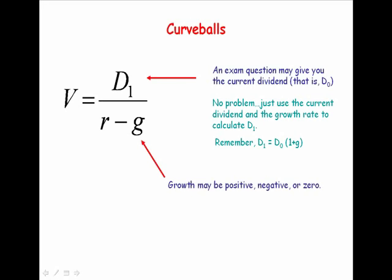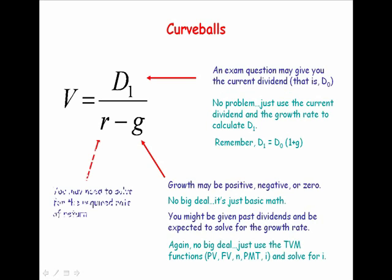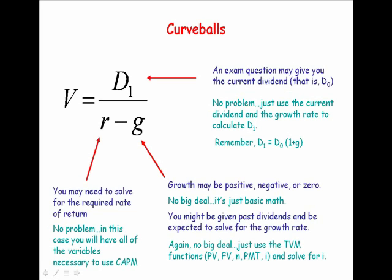The growth rate might be positive, negative, or zero — really, this is no big deal; it's just basic math. You might also be given past dividends and be expected to solve for the growth rate. Again, this is really no big deal — it's a time value of money question. Simply use your time value functions: PV, FV, N, and payment, and solve for the interest rate. You might also need to solve for the required rate of return on the stock. In that case, you will certainly have all the variables you need to use the capital asset pricing model to solve for the required rate of return.